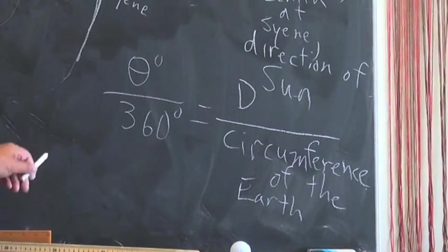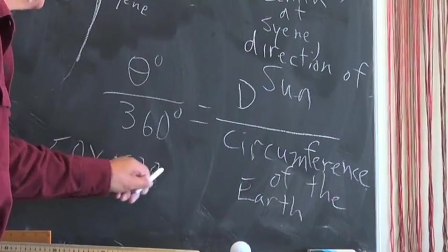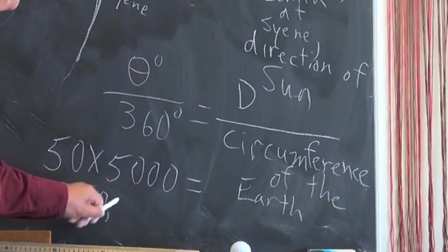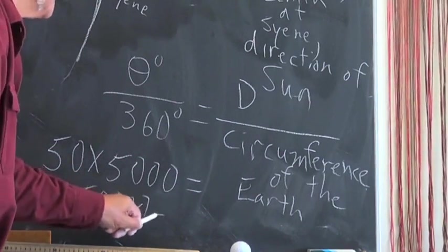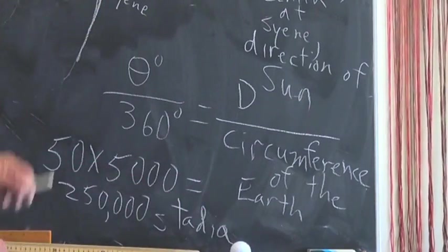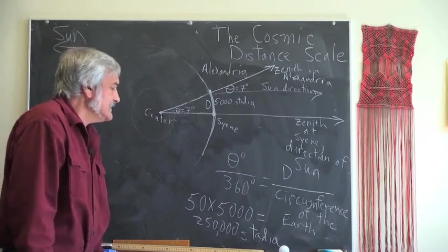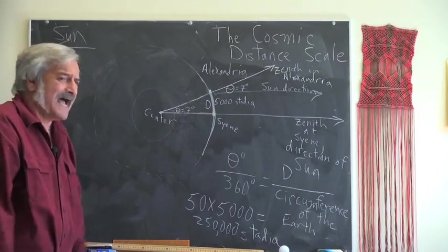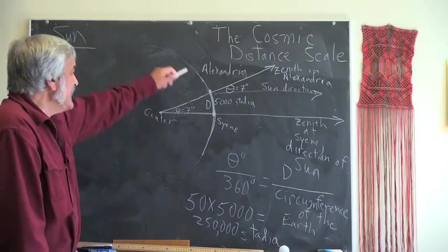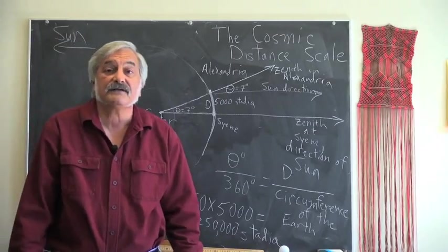Here is a segment of a circle. D is to the whole circumference of the Earth as 7 degrees is to the whole 360 degrees that makes the circle complete. Thus, the circumference of the Earth must be about 50 times 5,000 stadia or about 250,000 stadia. 7 into 360 is about 50. So 250,000 stadia must be the circumference of the Earth.